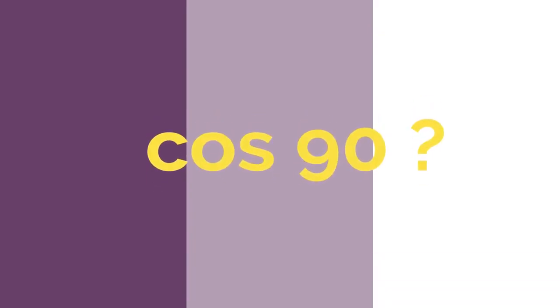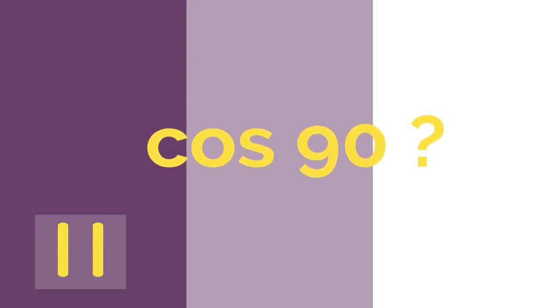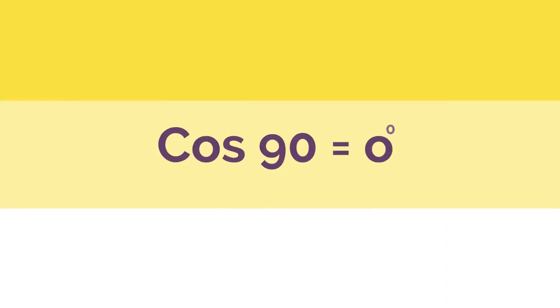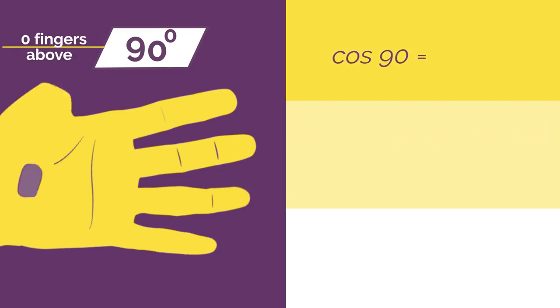What would cos 90 be? Work out the answer and click here when you're ready to check. Did you get zero? Bend down your 90 degree thumb and there are no fingers above. So root 0 divided by 2 is 0.